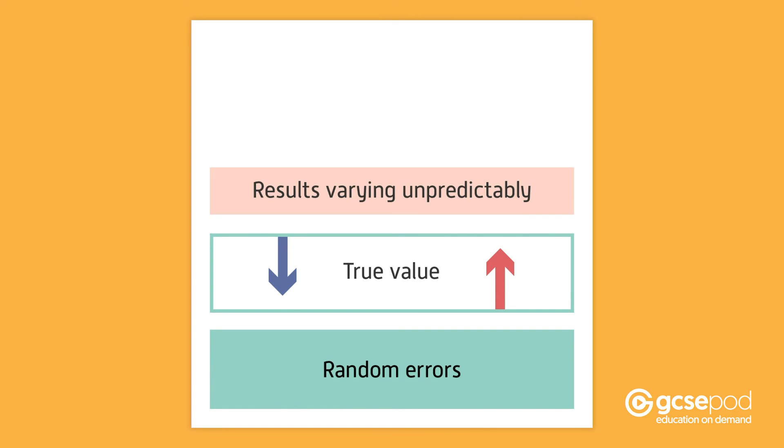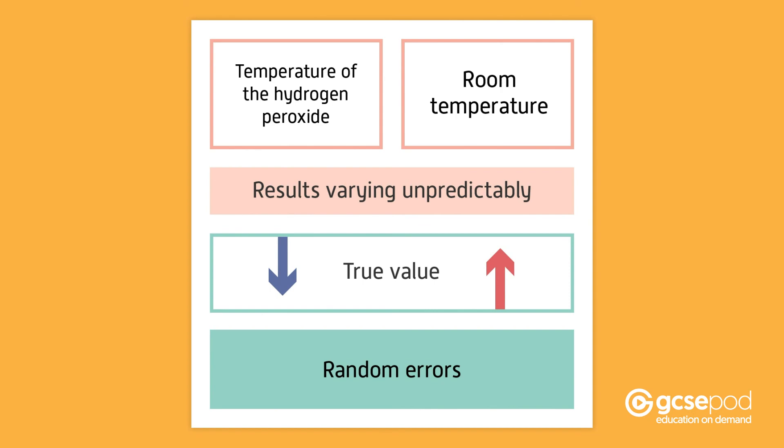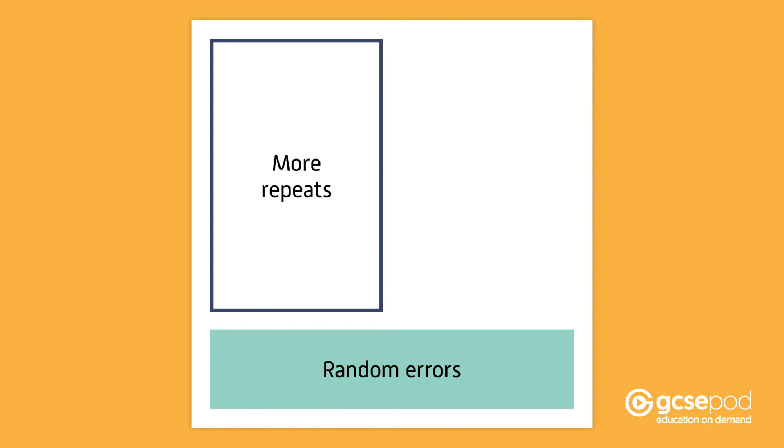This is due to results varying in an unpredictable way from one measurement to the next. For example, the temperature of the hydrogen peroxide or room temperature might have changed, affecting the results. The more repeats you do, however, the lower the effect of random errors on the mean.